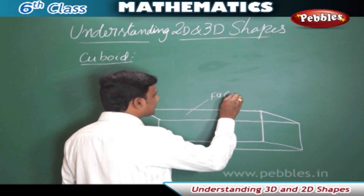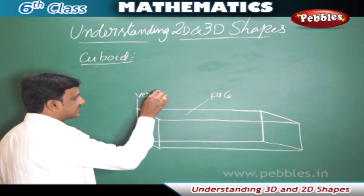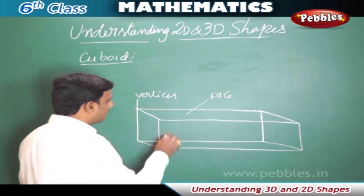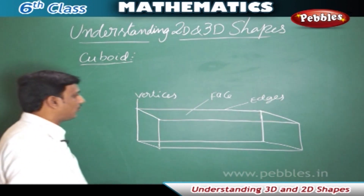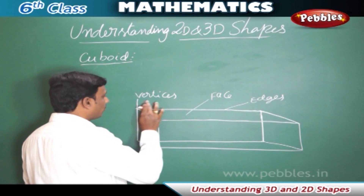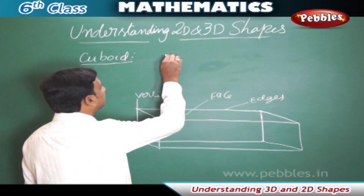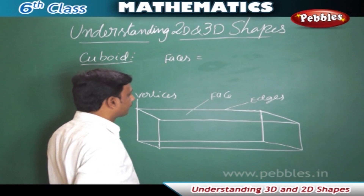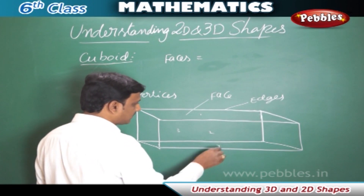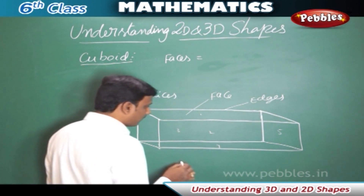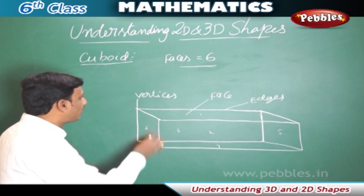The cuboid has a surface which is called a face. The corner points of a cuboid are called vertices, and the line segments along the edges are called edges. Now let us count how many faces a cuboid has: face 1, 2, 3, the bottom one makes 4, the right side makes 5, and 6. A cuboid has six faces.